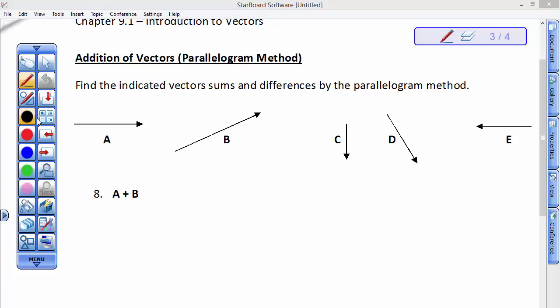We did this first question on the previous page, and I just want to demonstrate it again. We drew vector A. I'm trying to draw it about the length of this line. Then we took the tail of vector B, put it to the head of vector A, and drew a line that's B at the same angle and about the same length.